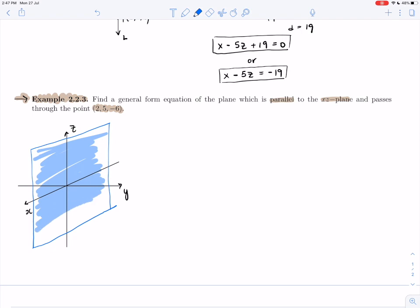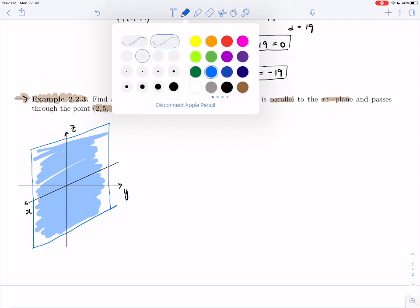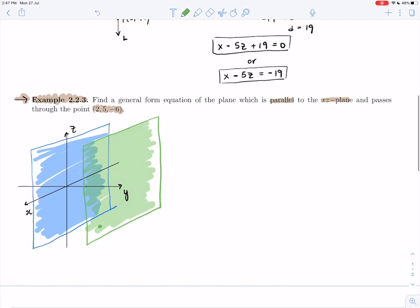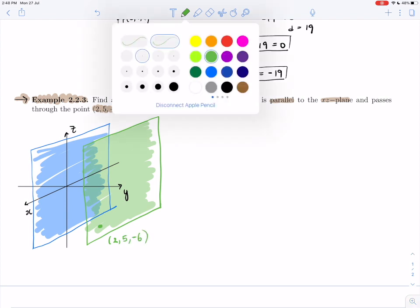Now we want a plane that is parallel to that and contains this given point. So we want our plane to be parallel to the Xz plane, like this. And we want our plane to contain this given point. So the point is 2, 5, minus 6. So if I approximate where that is, maybe somewhere there. 2, 5, minus 6 has got to be in the plane that we are going to give.